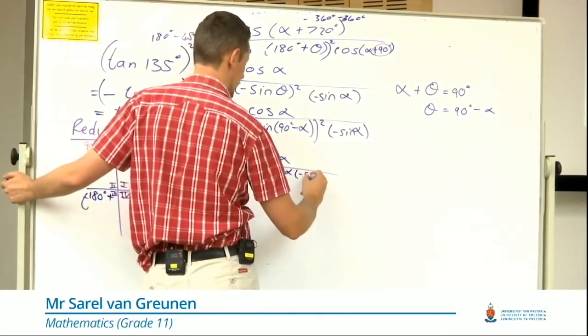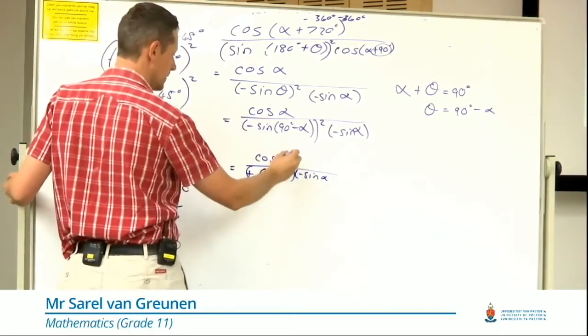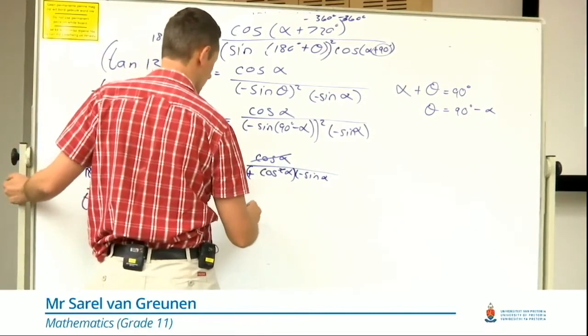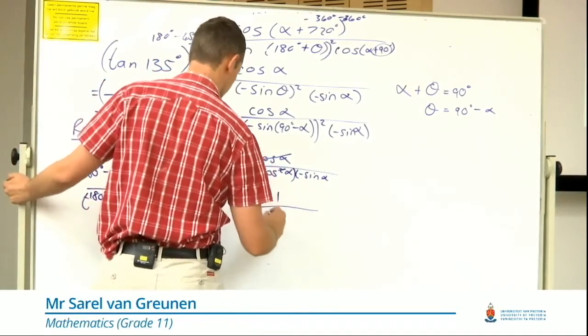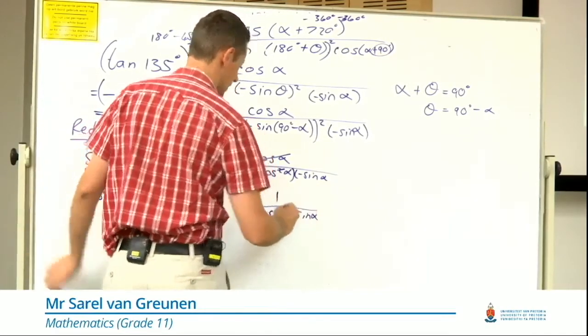times by negative sin alpha. Now the wonderful thing is now that cos can divide away with one of those, leaving me with one over negative cos alpha sin alpha.